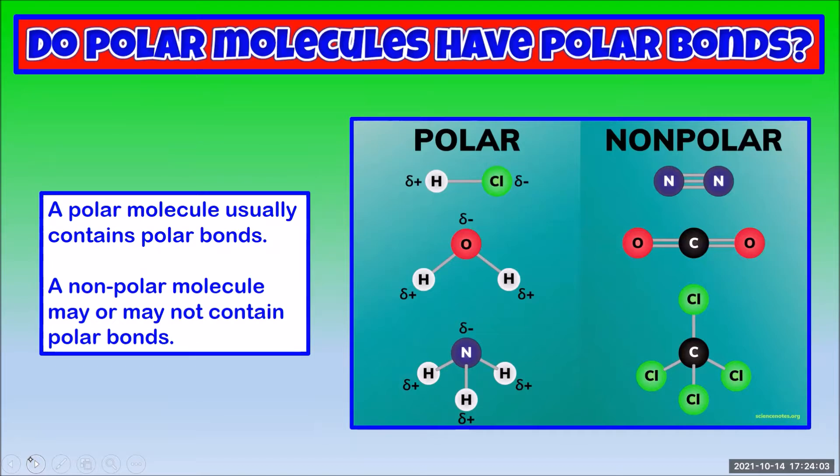In carbon dioxide, the electronegativity of the carbon is 2.5, and the electronegativity of the oxygen is 3.5. That's a polar bond.